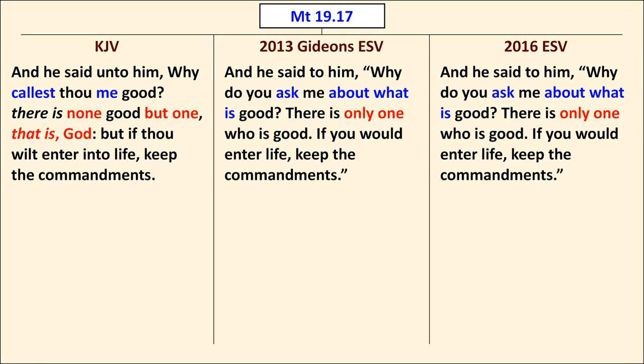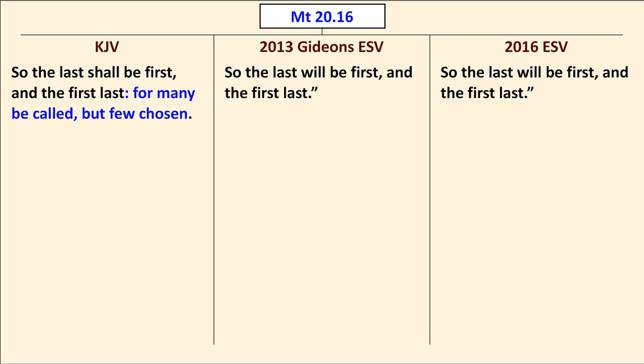In Matthew 19:17, the King James Version has "Why callest thou me good?" whereas the Gideon's ESV and the 2016 ESV have "Why do you ask me about what is good?" The King James Version then says "There is none good but one, that is, God," whereas both ESV editions have "There is only one who is good." In Matthew 20:16, the King James Version ends the verse with "For many be called, but few chosen," but the Gideon's ESV ignores that TR reading in agreement with the 2016 ESV.